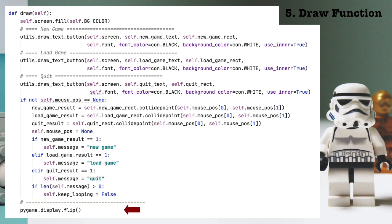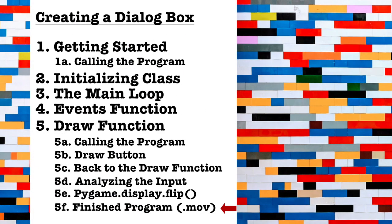Finally, we get to 5e, pygame display flip. This is arguably the most important line in the entire program. Nothing is getting drawn to the screen unless we flip the display surface. Okay, that's it. Let's run the program. 5f, finished program.